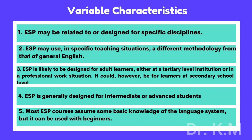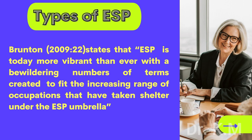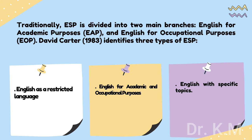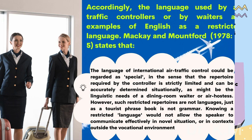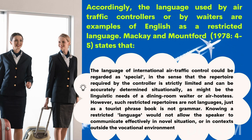Types of ESP. Brunton (2009, p. 22) states that ESP is today more vibrant than ever, with a bewildering number of terms created to fit the increasing range of occupations that have taken shelter under the ESP umbrella. Traditionally, ESP is divided into two main branches: English for Academic Purposes (EAP) and English for Occupational Purposes (EOP). David Carter (1983) identifies three types of ESP. Accordingly, the language used by air traffic controllers or by waiters are examples of English as a restricted language.